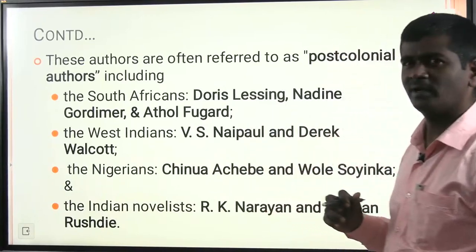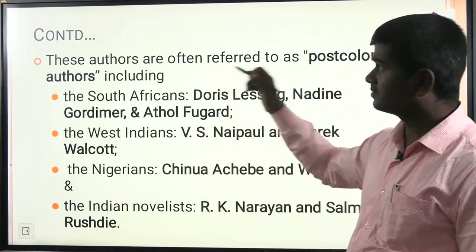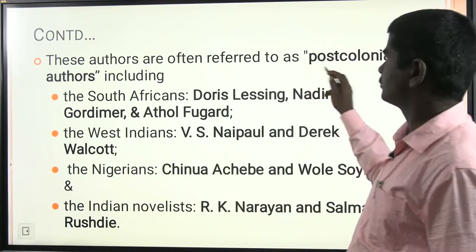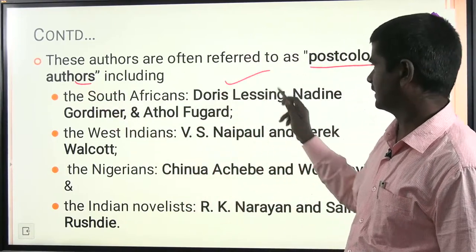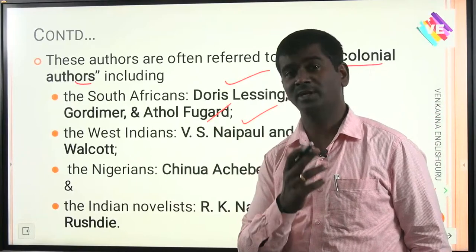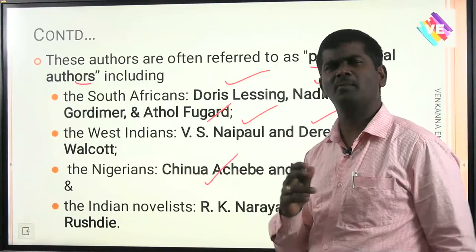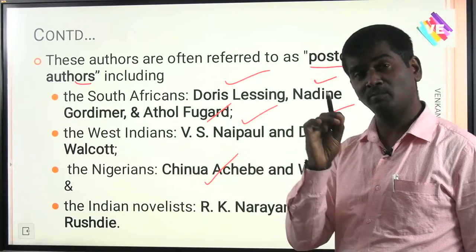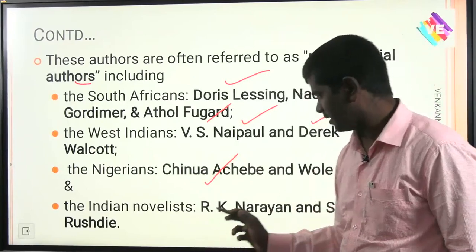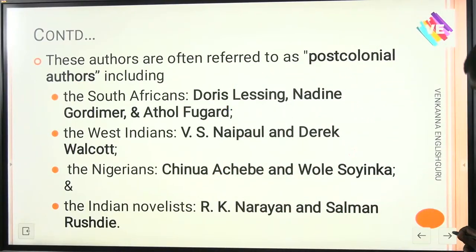These authors — writers who came from Indian Writing in English, Caribbean, Canadian, African, and Australian traditions — are often referred to as post-colonial authors. Popular post-colonial authors include South Africans Doris Lessing and Nadine Gordimer; West Indians V.S. Naipaul, who was awarded the Nobel Prize for Literature in 2001, and Derek Walcott, another Nobel laureate; Chinua Achebe, the father of the modern African novel; and from India, R.K. Narayan and Salman Rushdie.